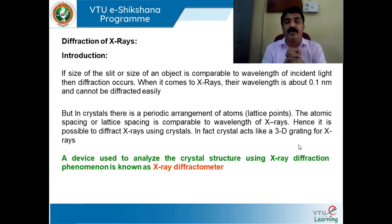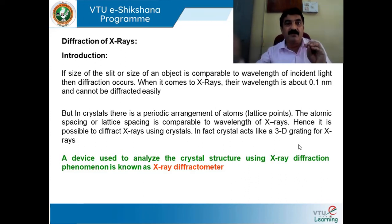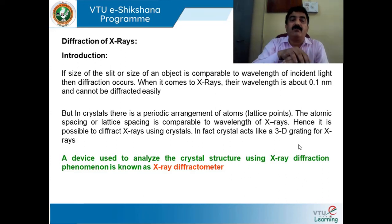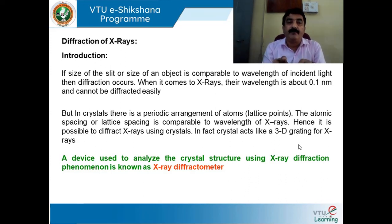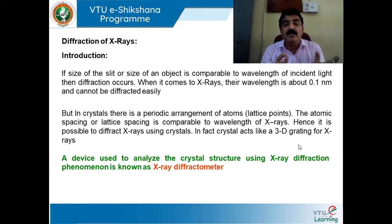A device used to analyze the crystal structure using X-ray diffraction is known as an X-ray diffractometer. With the help of bending of X-rays, we can easily study the arrangement of atoms, nature of atoms, environment around the atom, gap between the atoms, defects in the crystal, and whether impurities are present in the material. So many details can be extracted from the X-ray diffractometer, and we use it for analysis and characterization.